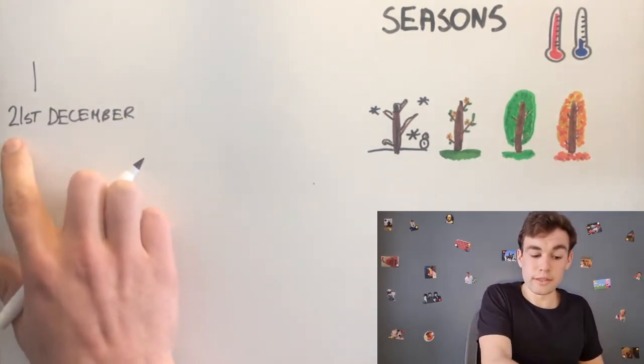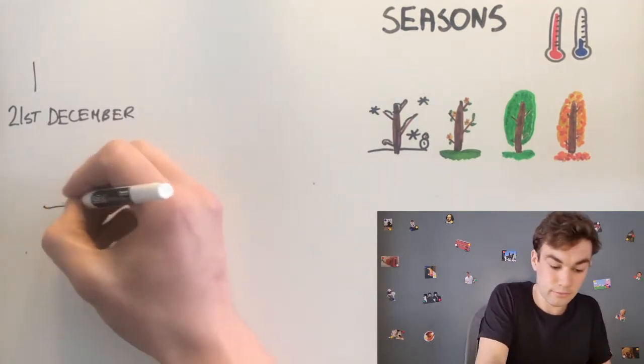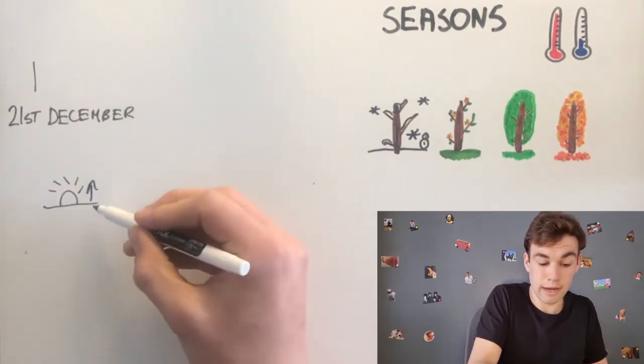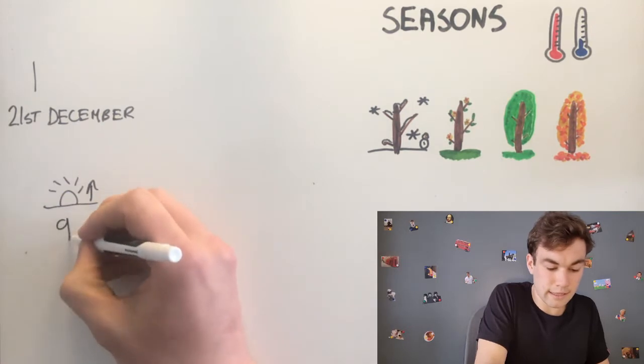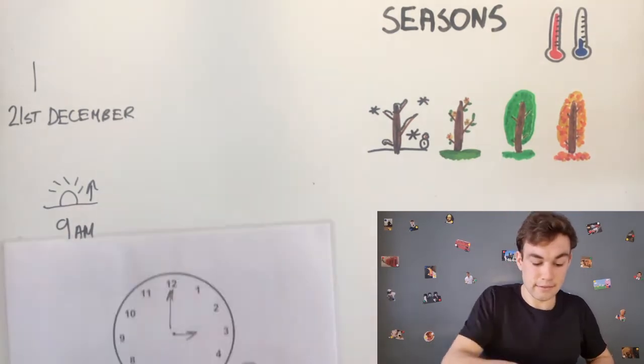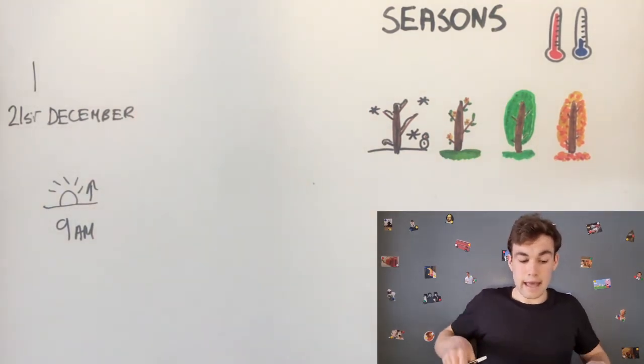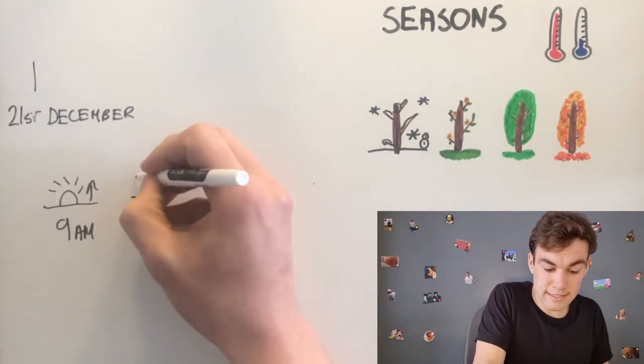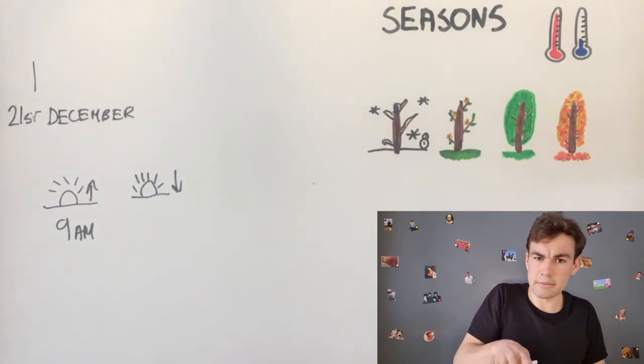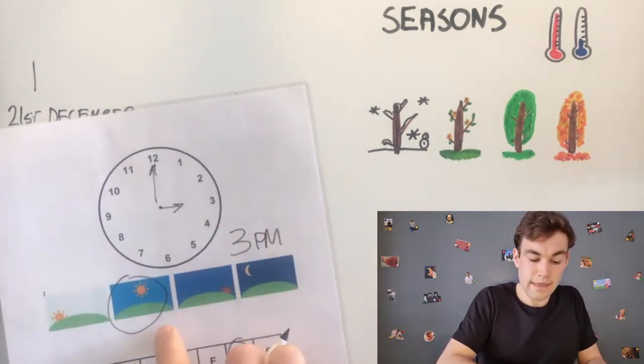On the 21st of December in the UK, the sun rises at about 9 a.m. or 9 in the morning. The sun rises at 9 a.m. and the sun sets at about 4 p.m. or 4 in the afternoon.